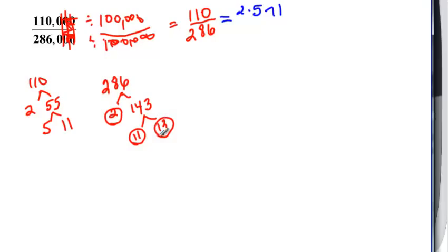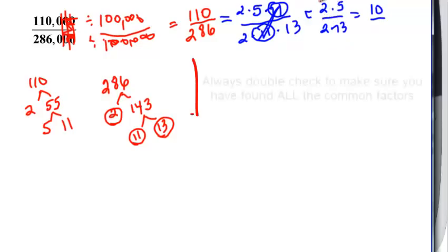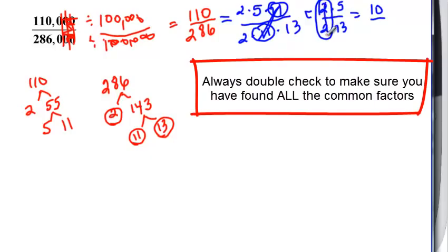2, 11, and 13 are all prime numbers. I have 2 times 11 times 13. You can see that they both have 11. So there's a factor of 1. Leads me with 2 times 5 over 2 times 13. Oh, I have a common factor. Always double check that. I had another common factor. So it's really going to be 5 over 13.